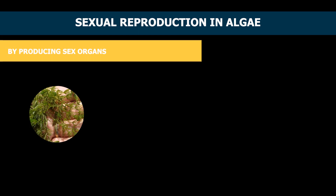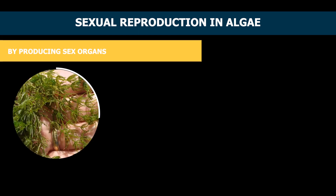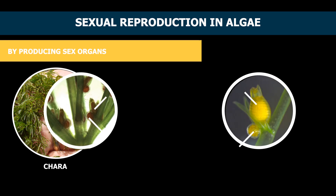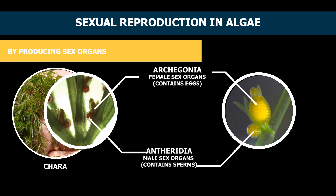2. By producing sex organs. Some algae do not have sex organs from the beginning but they grow them later. In such algae, the male sex organ is called antheridia and the female sex organ is called archegonia. Chara is a freshwater algae which reproduces by growing male and female sex organs.